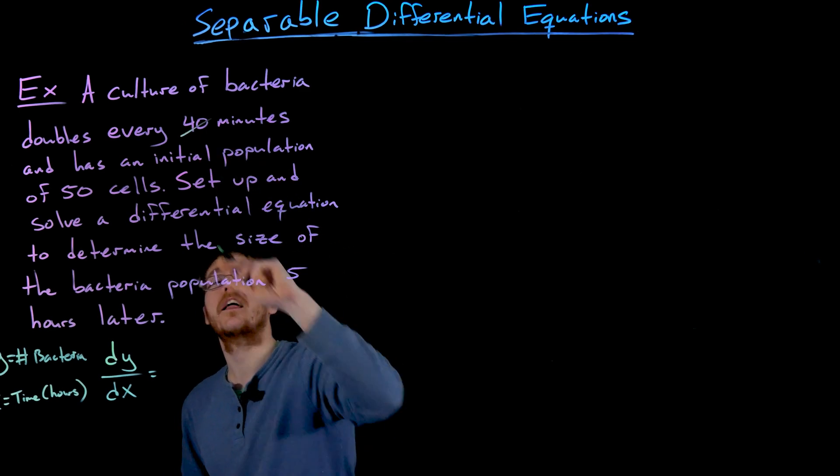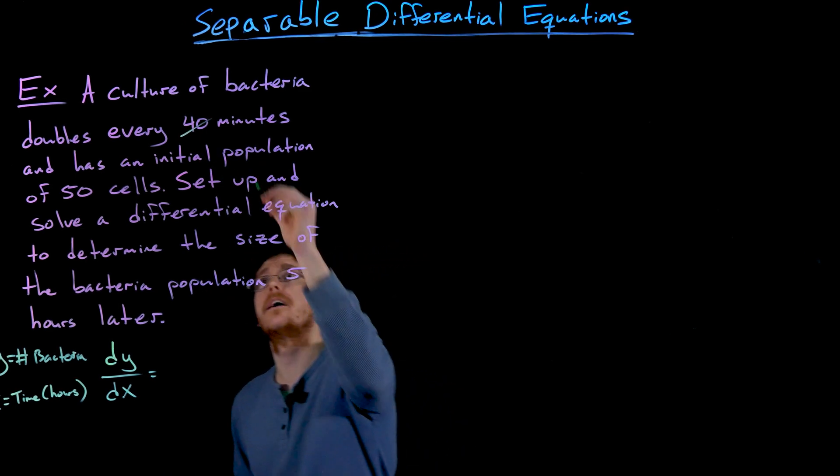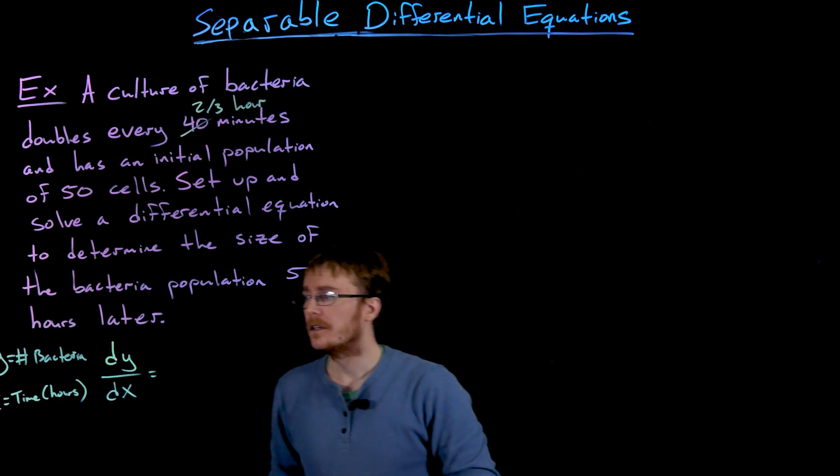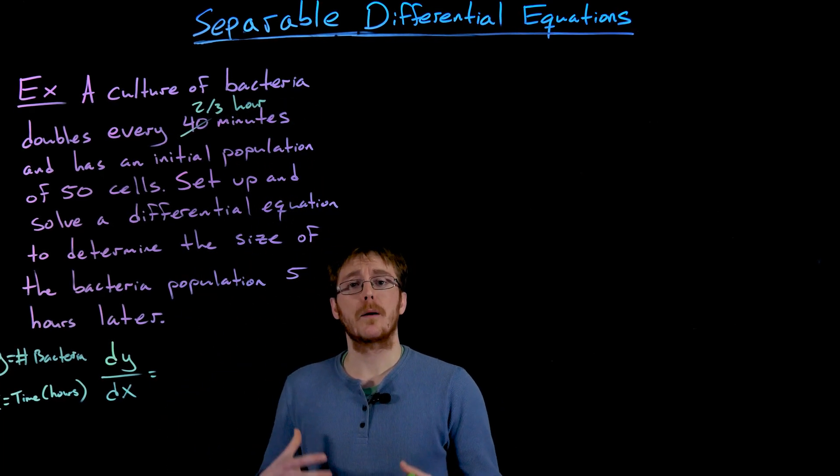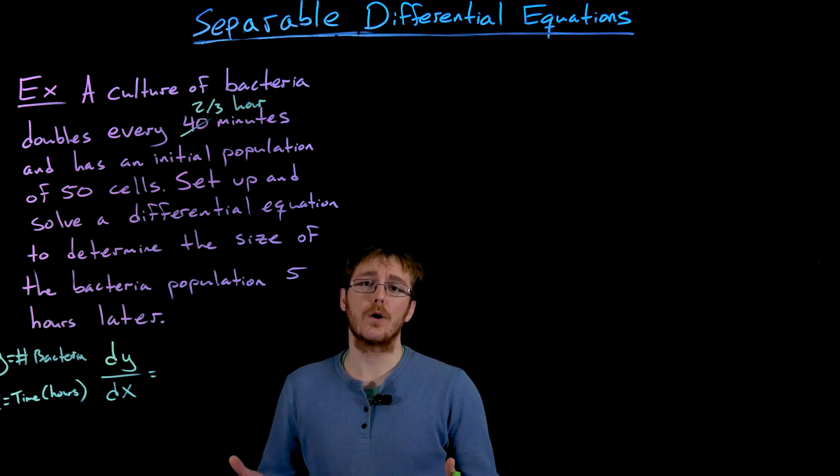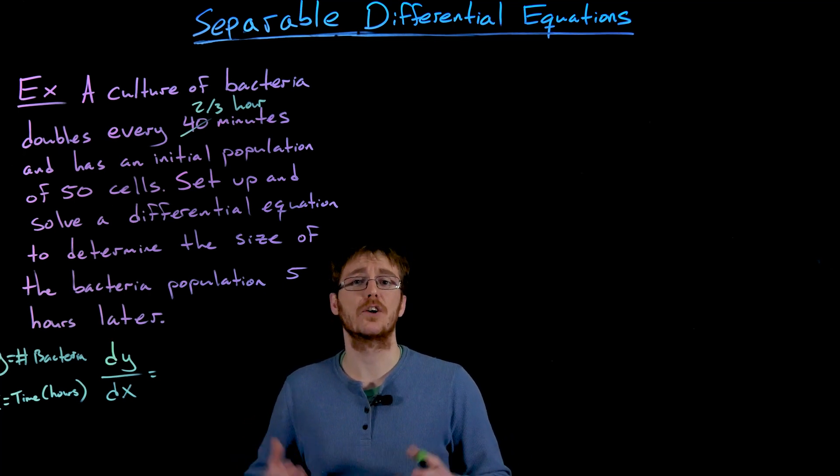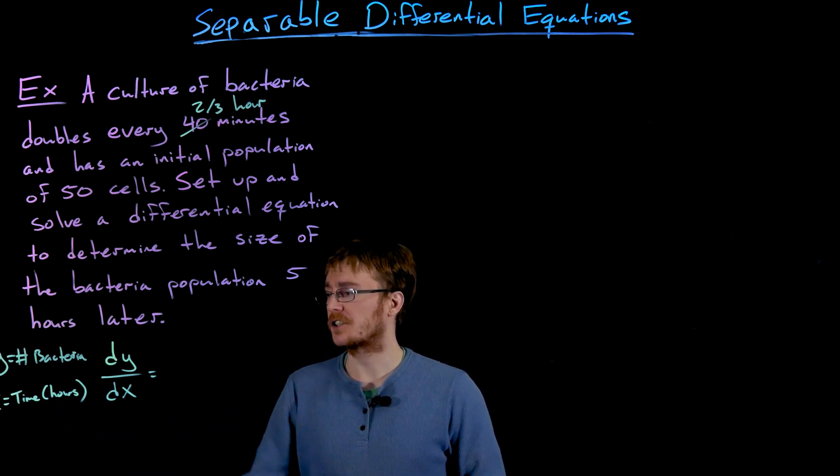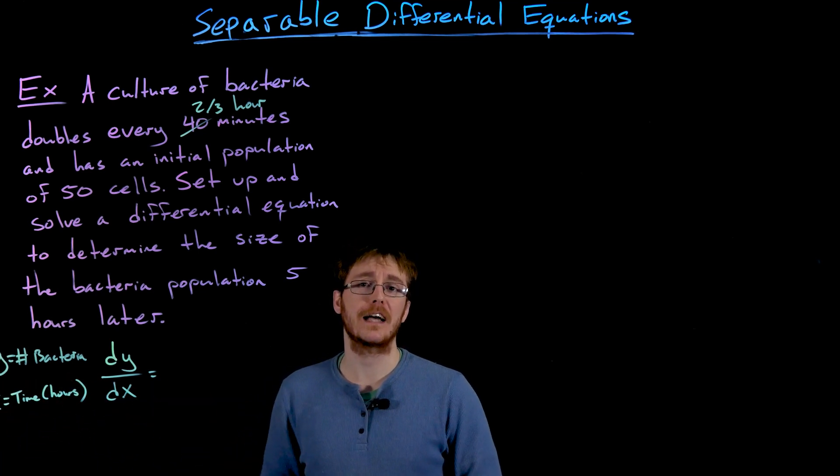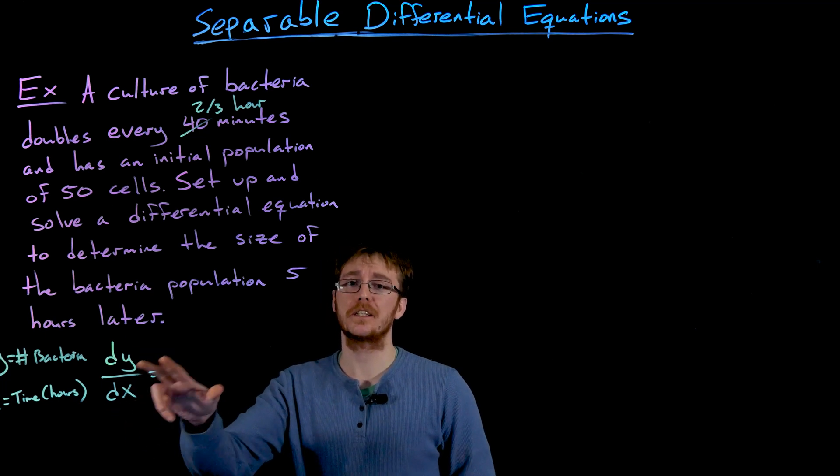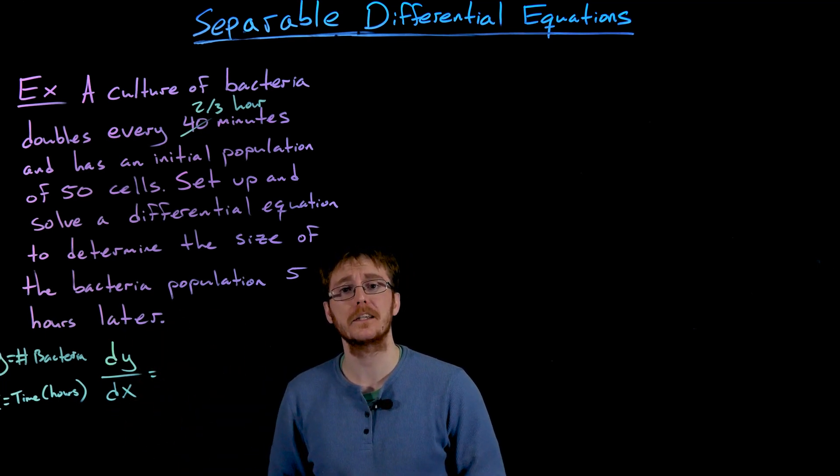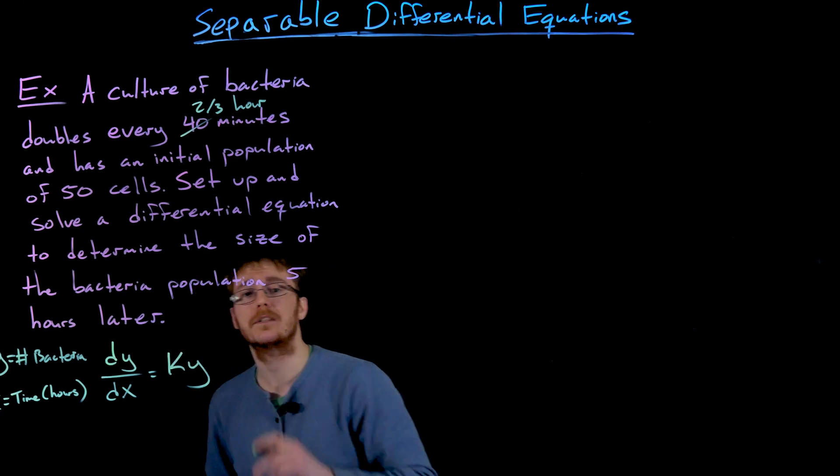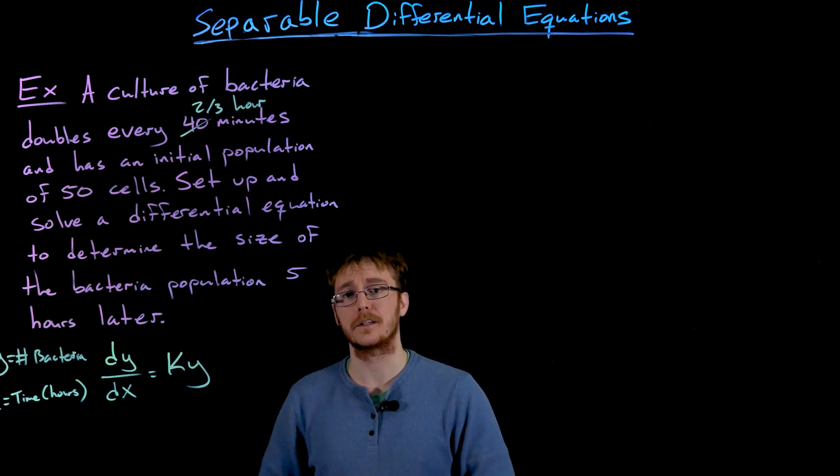So it'll be useful to not think of that as 40 minutes anymore, but maybe two-thirds of an hour. What we know is the population of bacteria is going to grow depending on the size it is currently at. Because our units are a little wonky here, and not just in terms of 40 minutes per unit of x, we can't just say that the population is two times the current size of the population. It's some unknown constant k times the current size of our population.